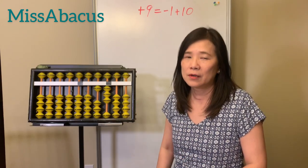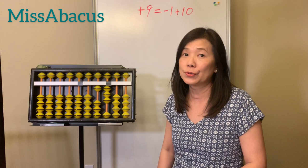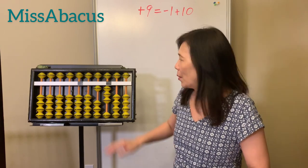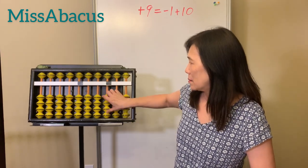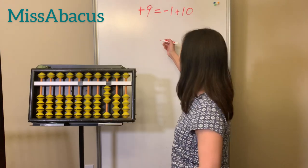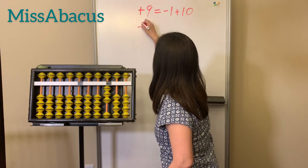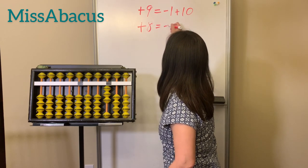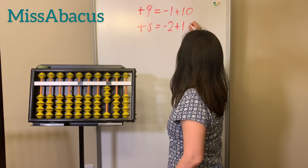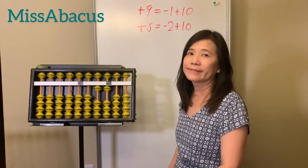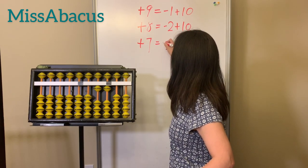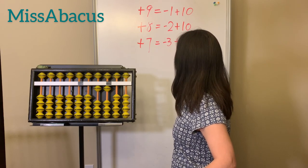If you don't have enough bits, you need to apply this rule. For plus eight: if I have three here and plus eight, what's the complement of eight? It's two. So the rule is take away two, plus ten. Same for plus seven — all these rules are the same, you only need to remember the complement.